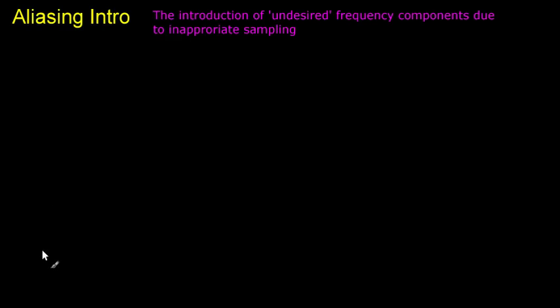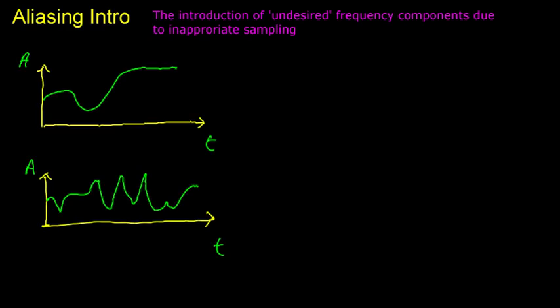Now, aliasing does relate to a choice of sampling rate and at this stage you should be aware that if you have a fast changing signal, you will need to sample it at a higher rate than a signal that changes more slowly. So, I just have a couple of examples to highlight that fact.